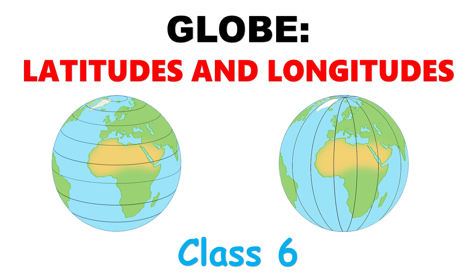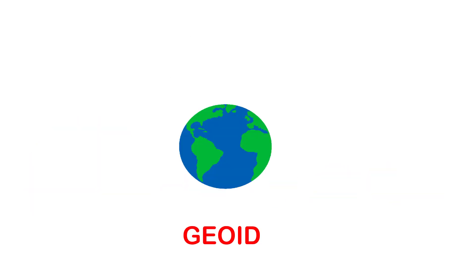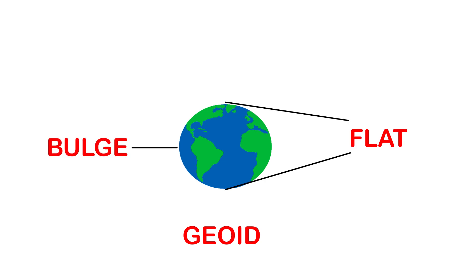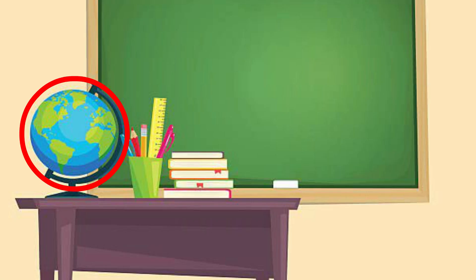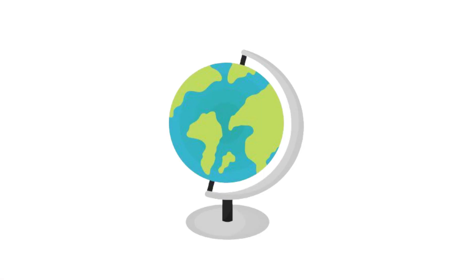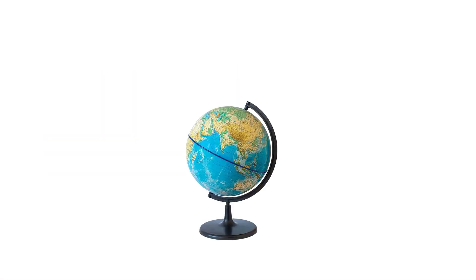Today we're going to see the second chapter which is Globe, Latitudes and Longitudes. In the previous chapter you have read that our planet earth is not a sphere — it is slightly flattened at the north and the south poles and bulges in the middle. You may look at a globe carefully in your classroom to get an idea. A globe is a true model which is a miniature form of the earth.